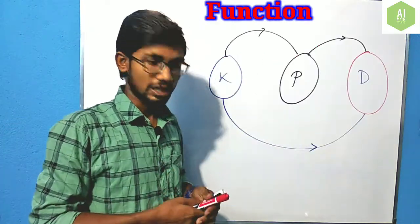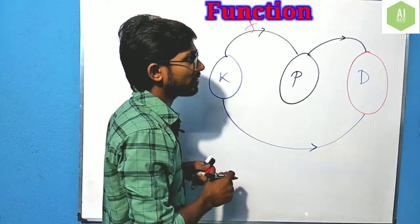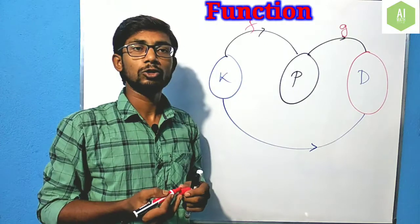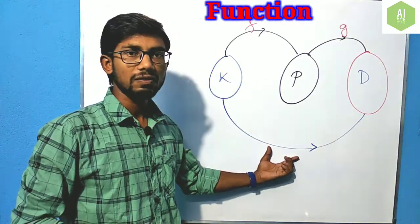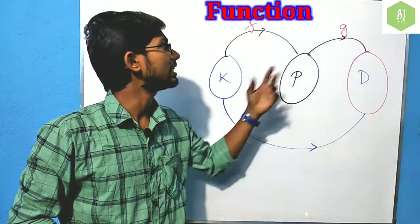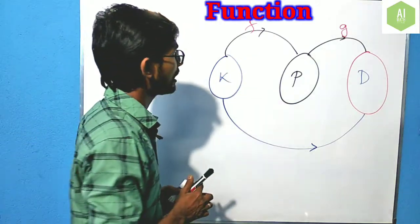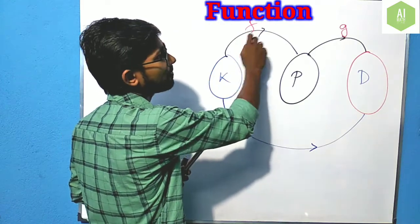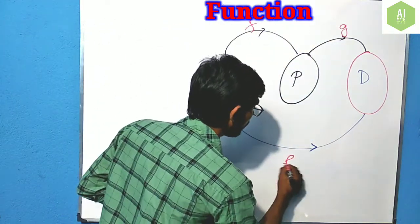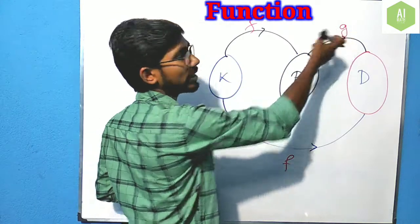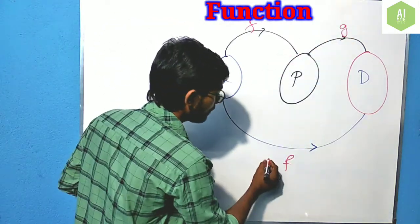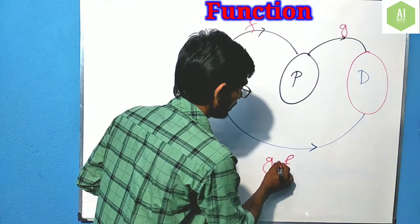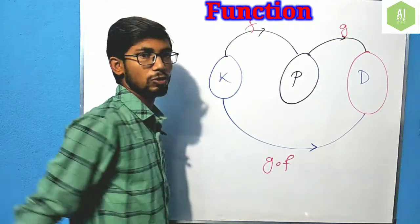This is the composition function. If we have to denote it using F and G, the composition function will be written as one combined function. We write it using a composition sign, and we call it G composed with F, written as G∘F.